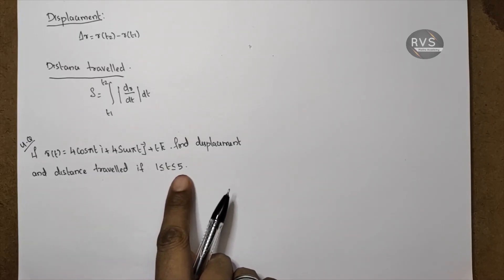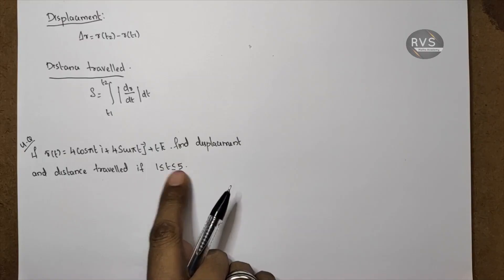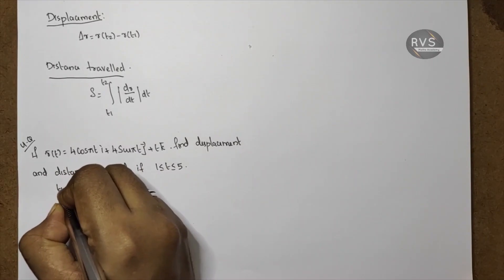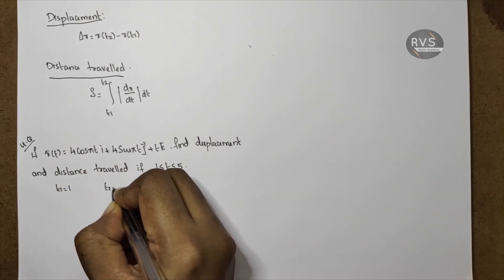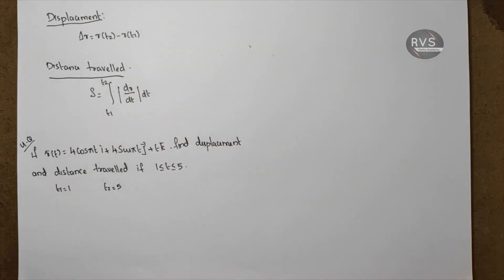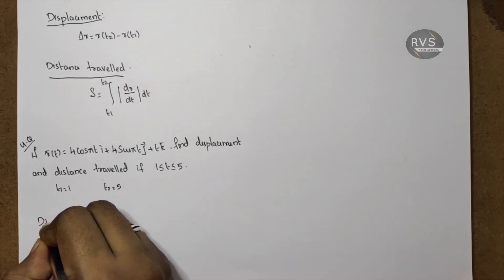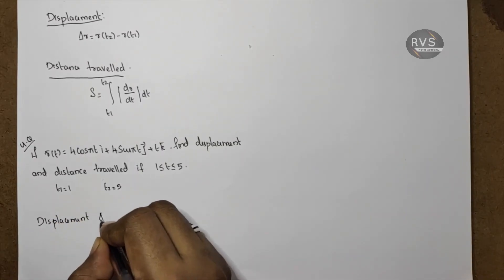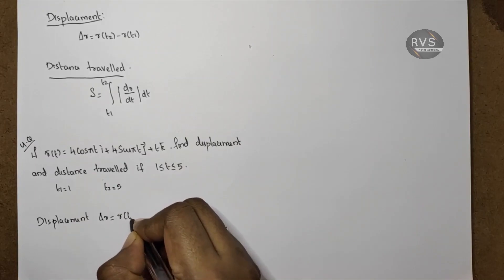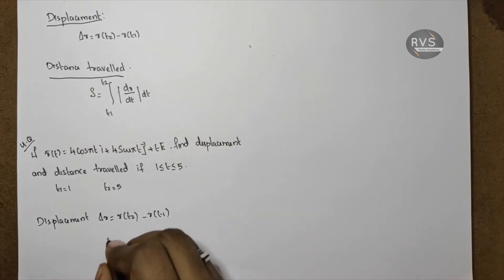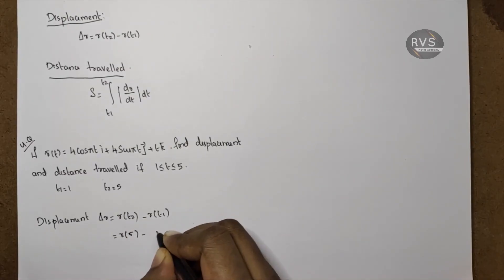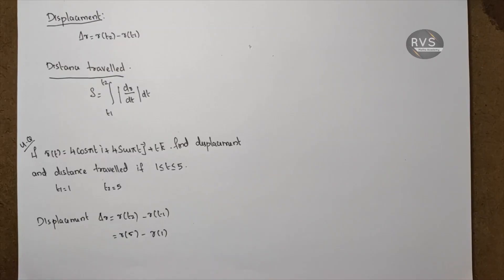Since 1 ≤ t ≤ 5, t varies from 1 to 5, so t1 = 1 and t2 = 5. To find displacement first: displacement equals r(t2) minus r(t1), which is r(5) minus r(1).